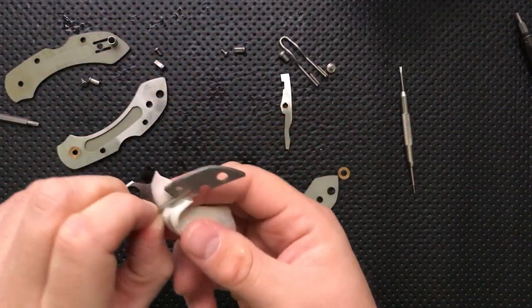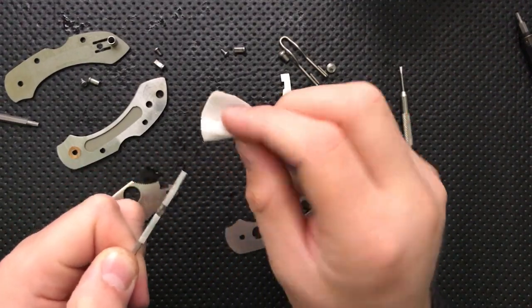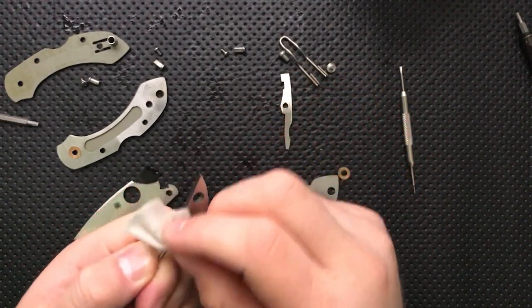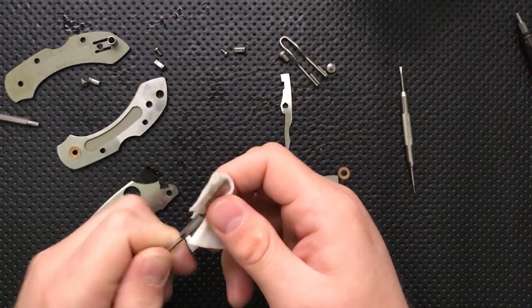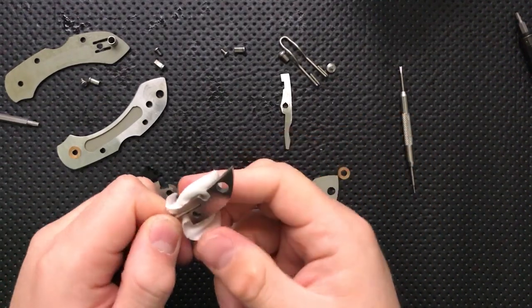I am going to go ahead and frog lube this knife because the G10 and the liners are right up against each other, and that's a recipe for rust if you're not careful. So that's clean. Let's clean this little backspacer portion here.